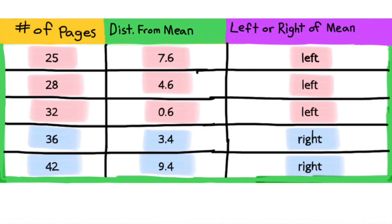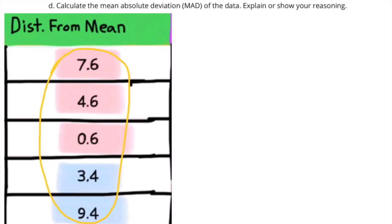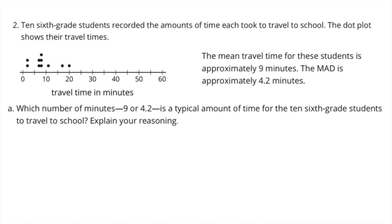Part d: Calculate the mean absolute deviation, or MAD, of the data. First, add up all five of the distances from the mean. Then divide that total by five. The mean absolute deviation, or MAD, for these five pieces of data is 5.2. Number two: Ten sixth-grade students recorded the amounts of time each took to travel to school.